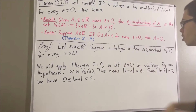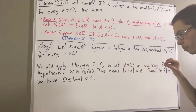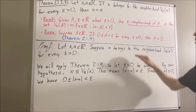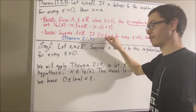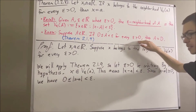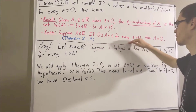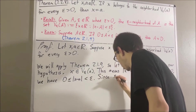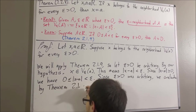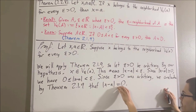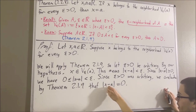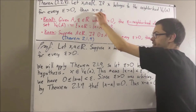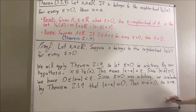Putting this together, we gave ourselves an arbitrary epsilon greater than zero and showed that zero is less than or equal to the absolute value of x minus a, which is less than epsilon. Since epsilon greater than zero was arbitrary, this means for every epsilon greater than zero, zero is less than or equal to the absolute value of x minus a, which is less than epsilon. We have proven precisely the hypothesis of Theorem 2.1.9, so it follows that the absolute value of x minus a is equal to zero. Since the absolute value of x minus a equals zero, this implies x minus a equals zero, and therefore x is equal to a. That is exactly what we wanted to prove, so this completes the proof.